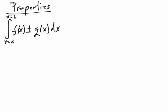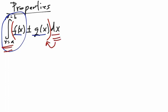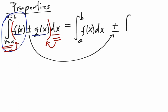We have to talk about the properties of integrals. The most basic property is that if I have the sum or difference of two functions I'm integrating — f of x and g of x — I can split this into two separate integrals, just like with derivatives: the integral from a to b of f of x dx, plus or minus the integral from a to b of g of x dx.